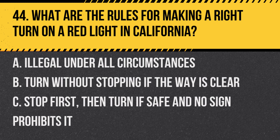Question 44: What are the rules for making a right turn on a red light in California? A. Illegal under all circumstances. B. Turn without stopping if the way is clear. C. Stop first, then turn if safe and no sign prohibits it. Answer: C. Stop first, then turn if safe and no sign prohibits it. In California, you may turn right on a red light after stopping and ensuring that the way is clear, unless a sign prohibits it.